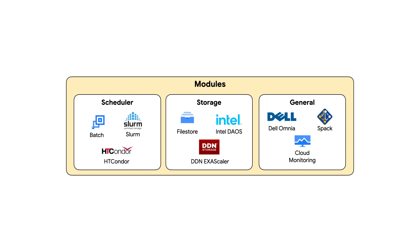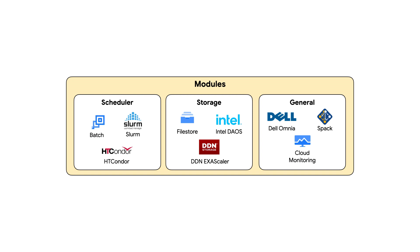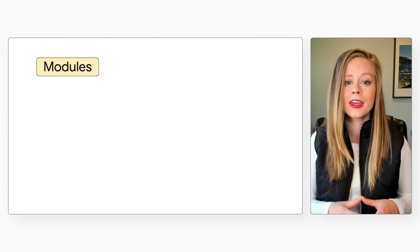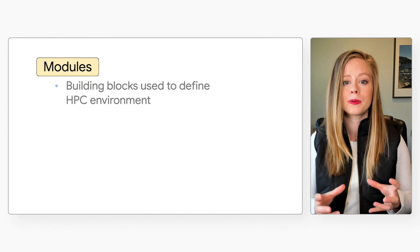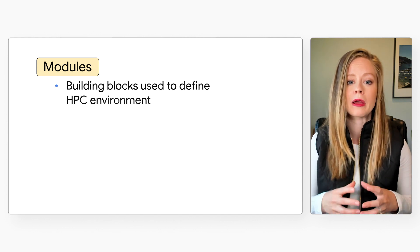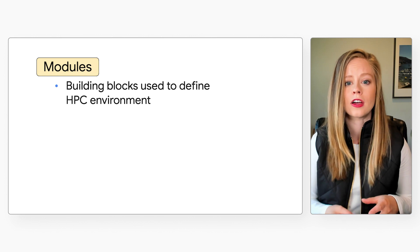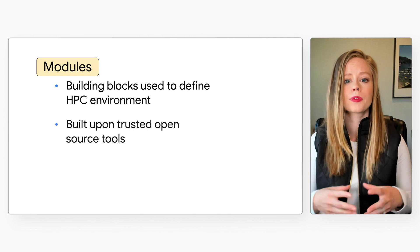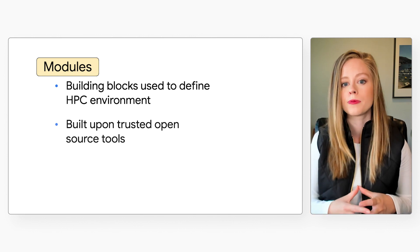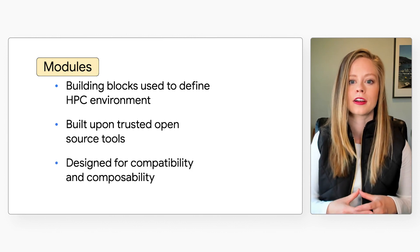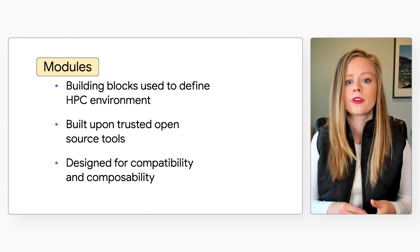For a complete list, visit the HPC Toolkit GitHub repo. You can also extend the Toolkit's functionality by using modules authored outside of the Toolkit, either from a Git repository or a local directory. The HPC Toolkit modules are the building blocks used to define your HPC environment. These modules define high-level components such as parallel file systems, workload managers, software stacks, and networking infrastructure. The Toolkit comes prepackaged with a growing list of core and community modules designed to work together to make it easy to combine partner technology solutions with your Google Cloud infrastructure.